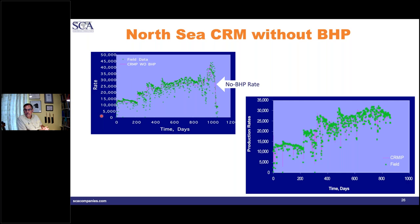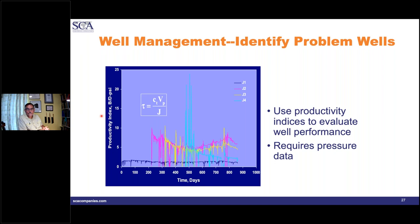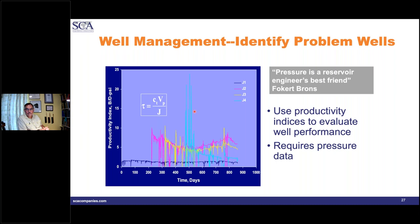Having bottom hole pressure data lets us characterize wells better because we can actually calculate the productivity index for each producer. A plot of productivity index varying with time across the four producers shows some good producers, some that are decaying with time. This gives considerably more insight than rates alone. As an old University of Texas professor, Volker Braune, would often say: pressure is a reservoir engineer's best friend — and you can definitely see that's true.